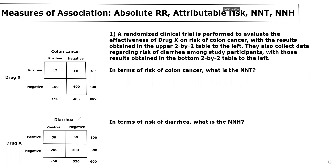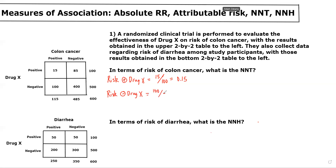The first step is calculating the risk among the exposed and unexposed. The risk among patients who had drug X exposure would be equal to the number who had colon cancer among those who received drug X — so 15 — divided by the total number of people who received drug X, which is 100. So the risk is 0.15. We then calculate the risk among those who did not receive drug X, which is 100 over 500, equal to 0.20.